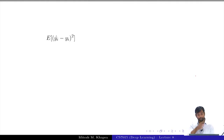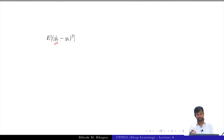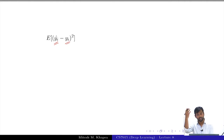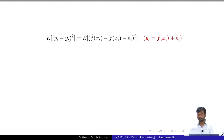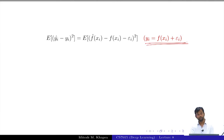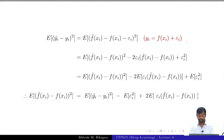We know y-hat_i because that is the prediction we make, and we know y_i. We do not know the function, but we see its output in the form of the data points given to us. We made the substitution that y_i equals the true function plus some noise, then did some manipulation to simplify.